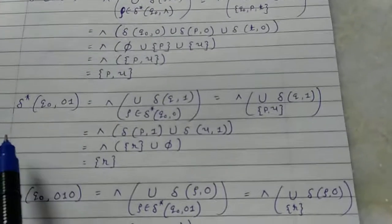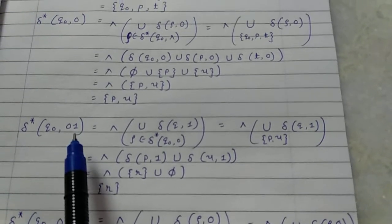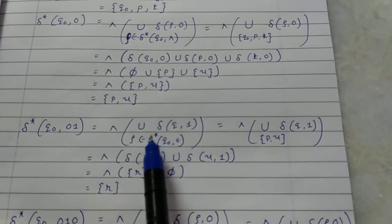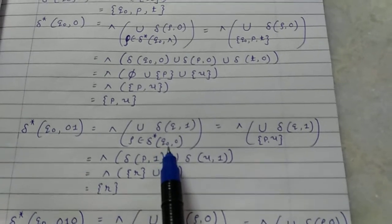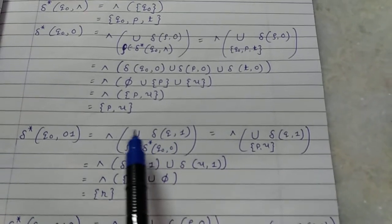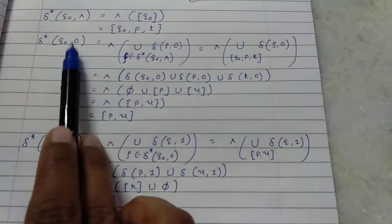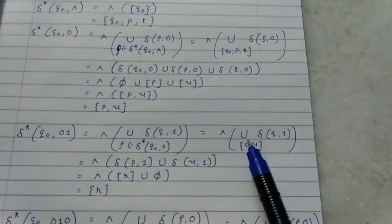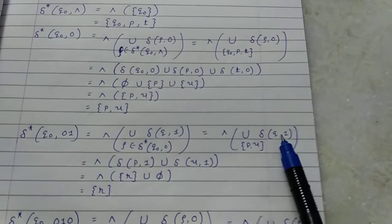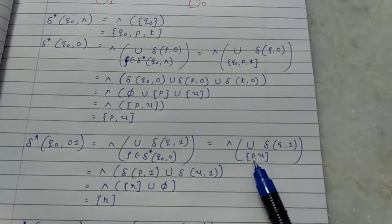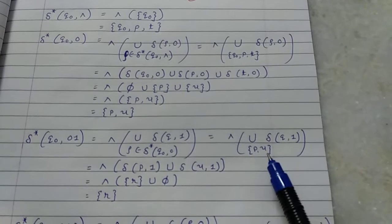Next, delta star of Q0 on input string 01. Using the recursive definition: for each state rho in delta star of Q0 on 0 — which is {P, U} — compute delta(rho, 1). So find delta(P, 1) union delta(U, 1).